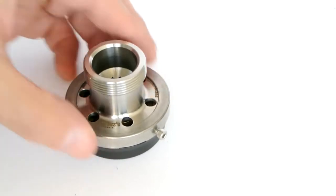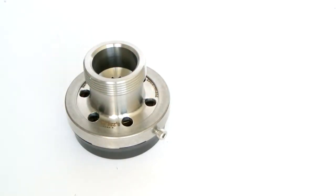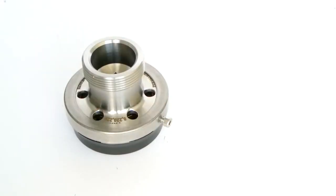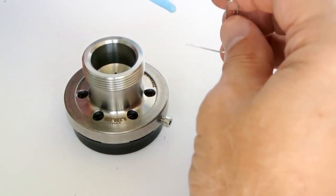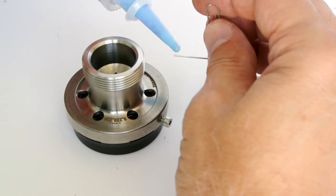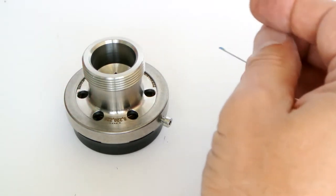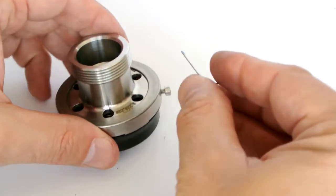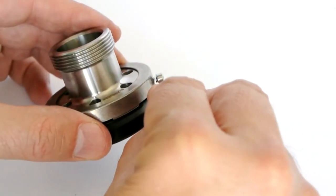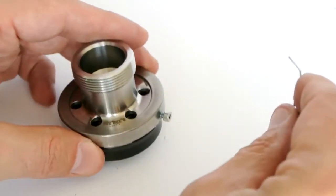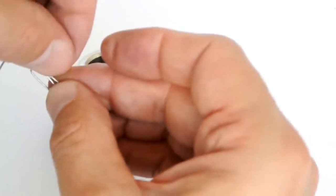Before I screw it in completely, I'm going to put a tiny dab of Loctite on the screw threads. I like to do this after I've started the screw assembly, just to be sure that I don't get the Loctite into the inner workings of the chuck. This makes sure that it's only on the threads.